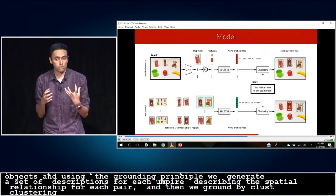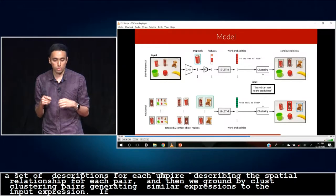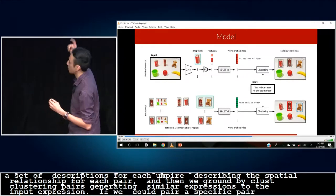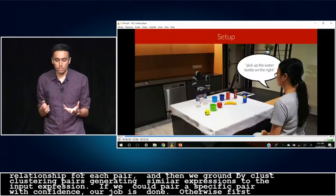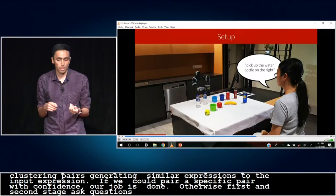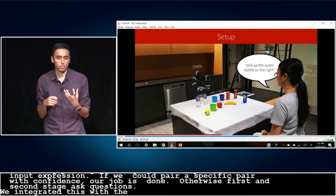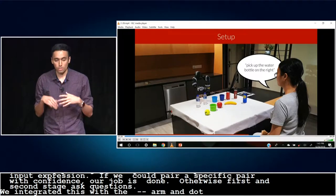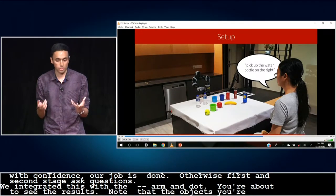If we can choose a single pair with confidence, then our job is done. Otherwise, we use one of the generated expressions from the first stage or the second stage to ask questions. So we integrated this model with the Kinova Mico arm and an Amazon Echo Dot. And you're about to see a representative sample of the results. Note that all the objects you're about to see are part of the test set, which weren't seen during training.